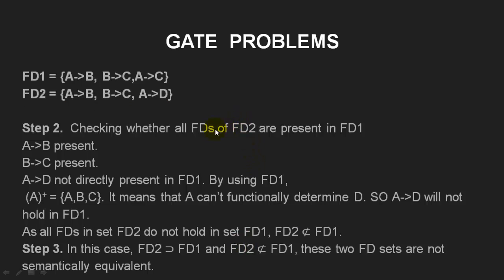Next we check whether we can determine FDs of FD2 using FD1. A→B and B→C are present in FD1. But A→D is not directly present, so we check the closure of A in FD1: A determines B, B determines C, but D cannot be determined. That means A→D is not derivable from FD1, so FD1 is not a superset of FD2. Therefore, FD2 is a superset of FD1 but FD1 is not a superset of FD2, meaning these two FD sets are not semantically equivalent.